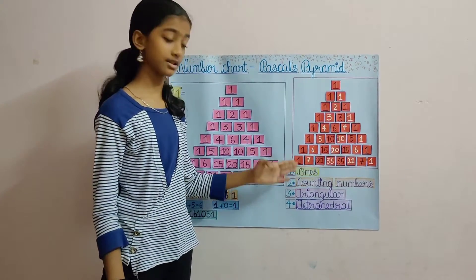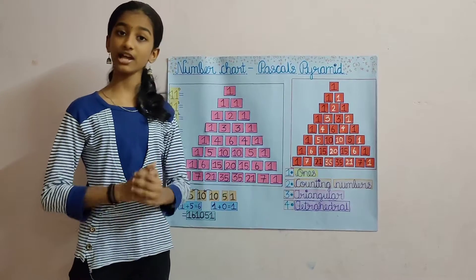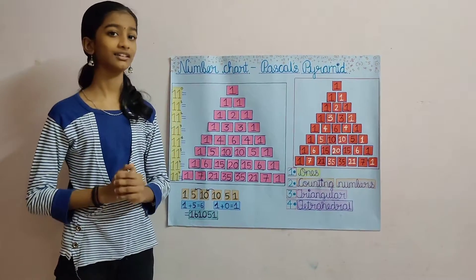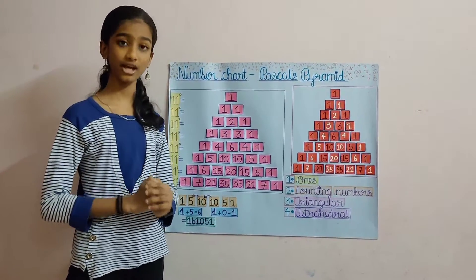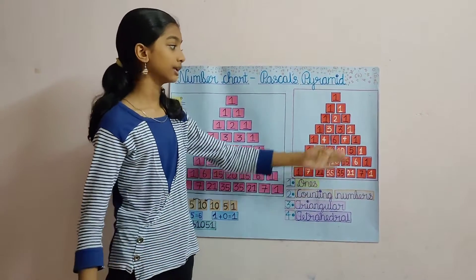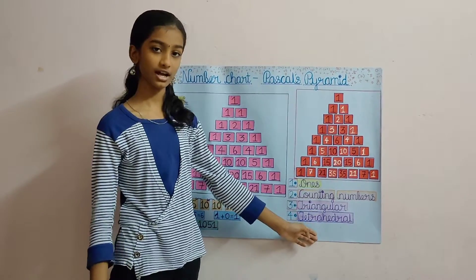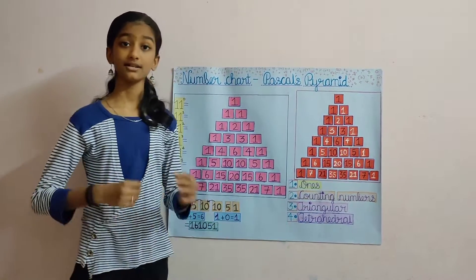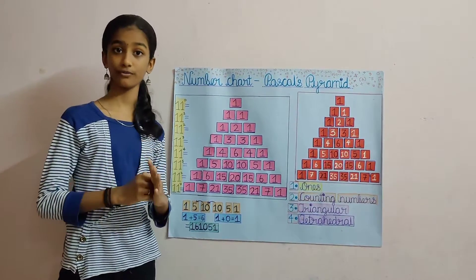The third diagonal represents the triangular numbers. Triangular numbers are the numbers used to make a triangle. And the fourth diagonal represents tetrahedral numbers. Tetrahedral numbers have 4 faces.